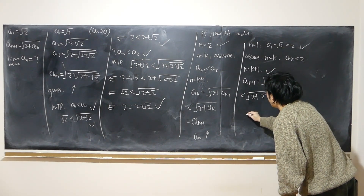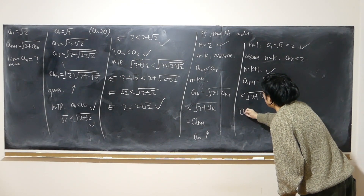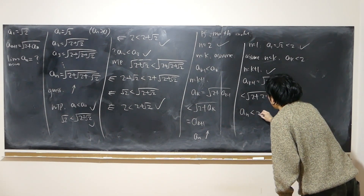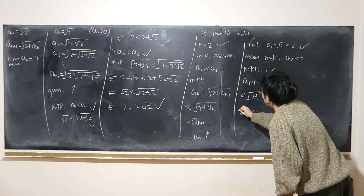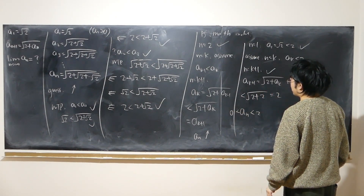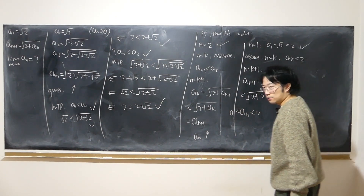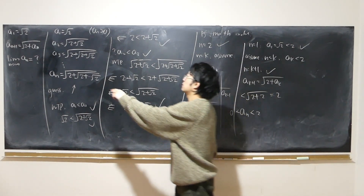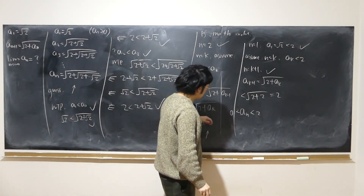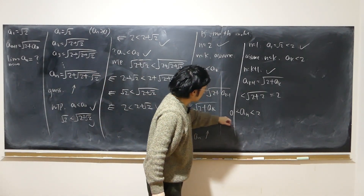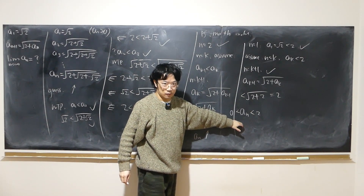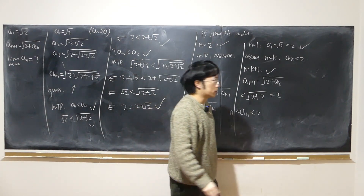For every positive integer n, a_n is always bounded above by 2 and bounded below by 0. The sequence is not only monotonically increasing but also bounded above, which means it must have a limit.